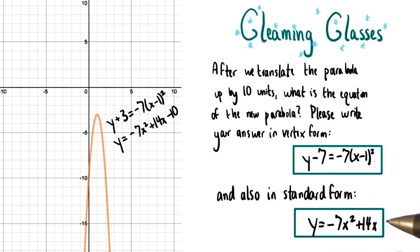To get this in standard form, we just need to multiply everything out and simplify. That gives us an answer of y equals negative 7x squared plus 14x.